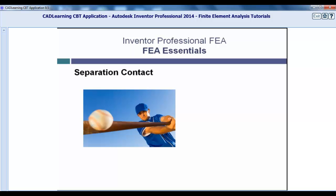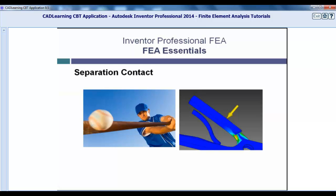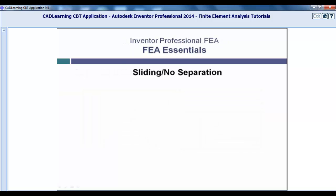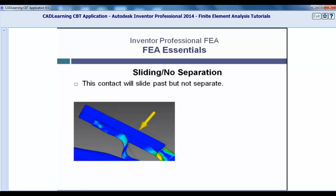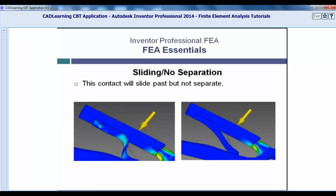Sliding No Separation. Sliding with no separation means that the two parts are allowed to slide past each other in a simulation, but not penetrate each other. In this example you can see the difference between a bonded contact and a sliding no separation contact. Notice how the stress is concentrated in the bonded example, but in the sliding no separation example the stress is pretty much evenly spread.